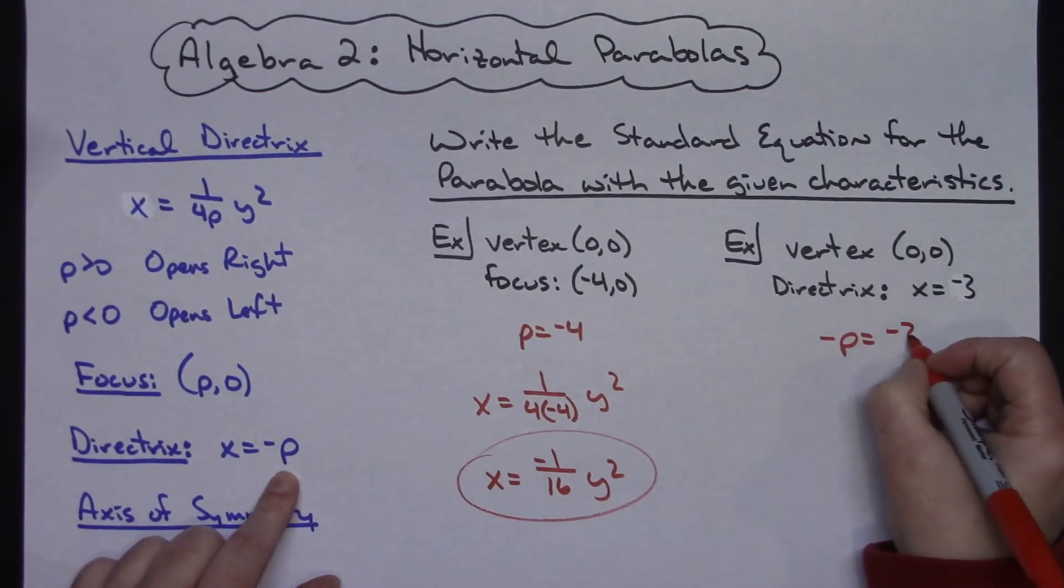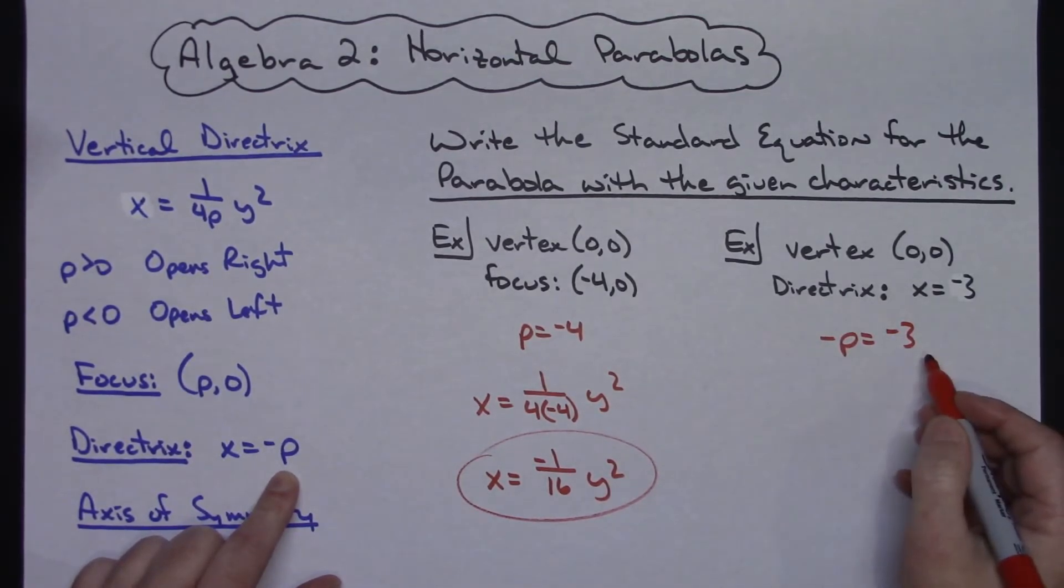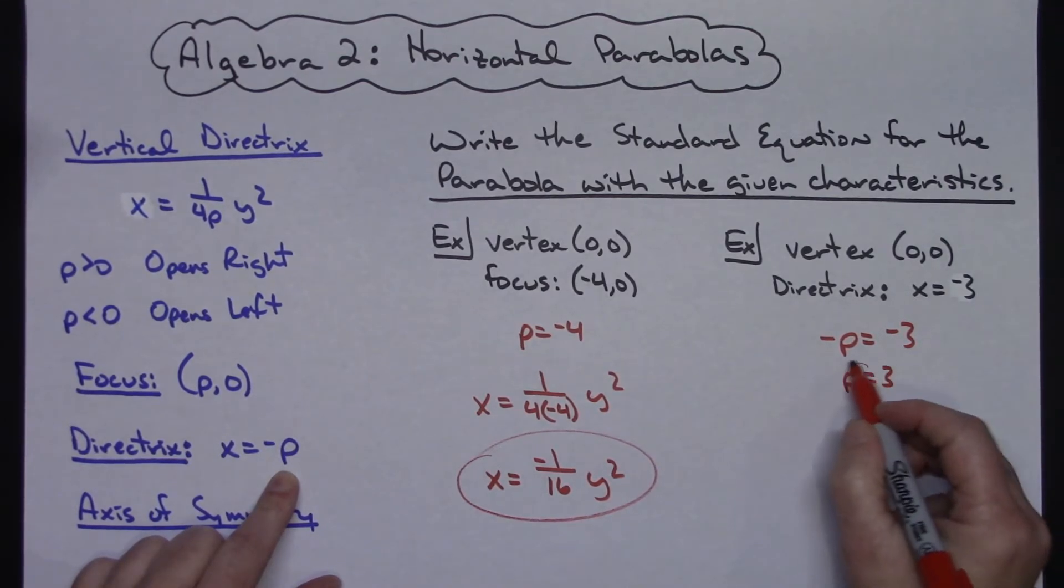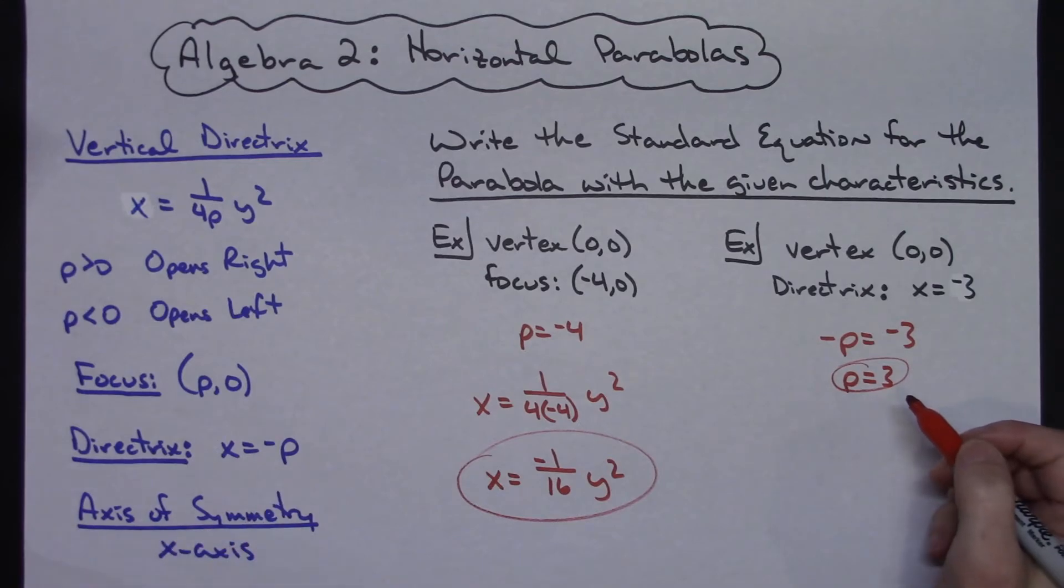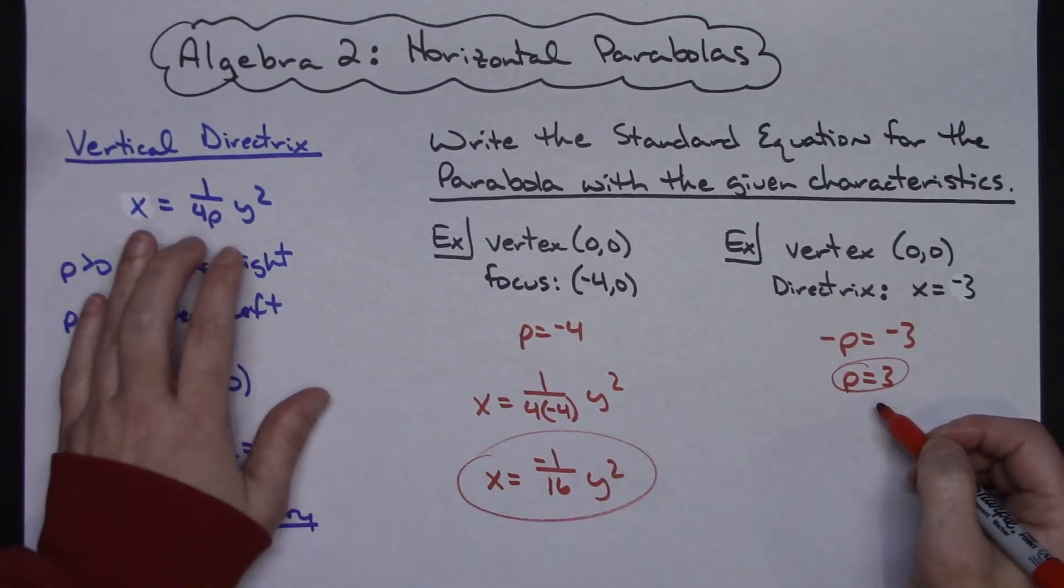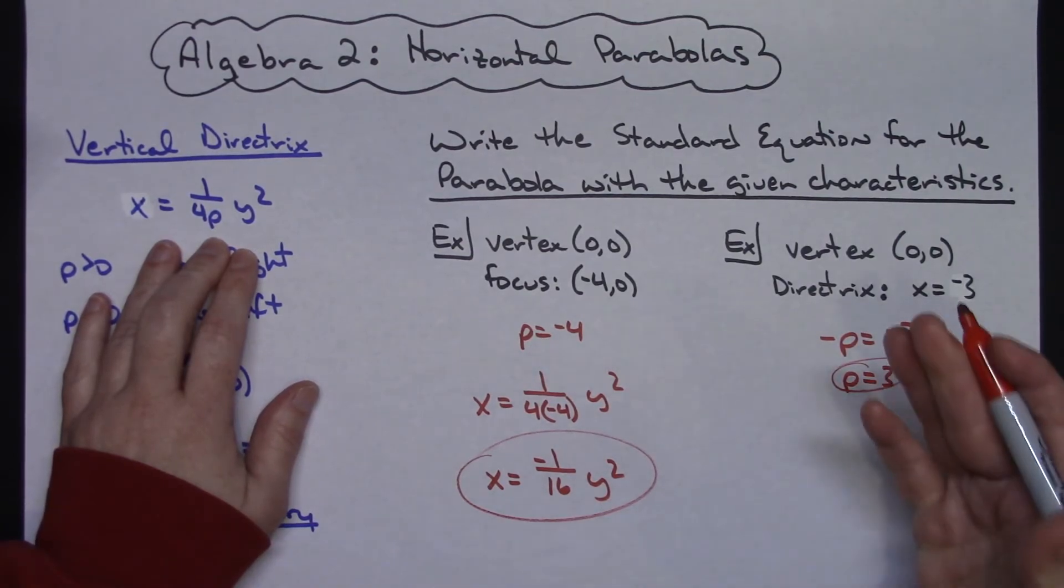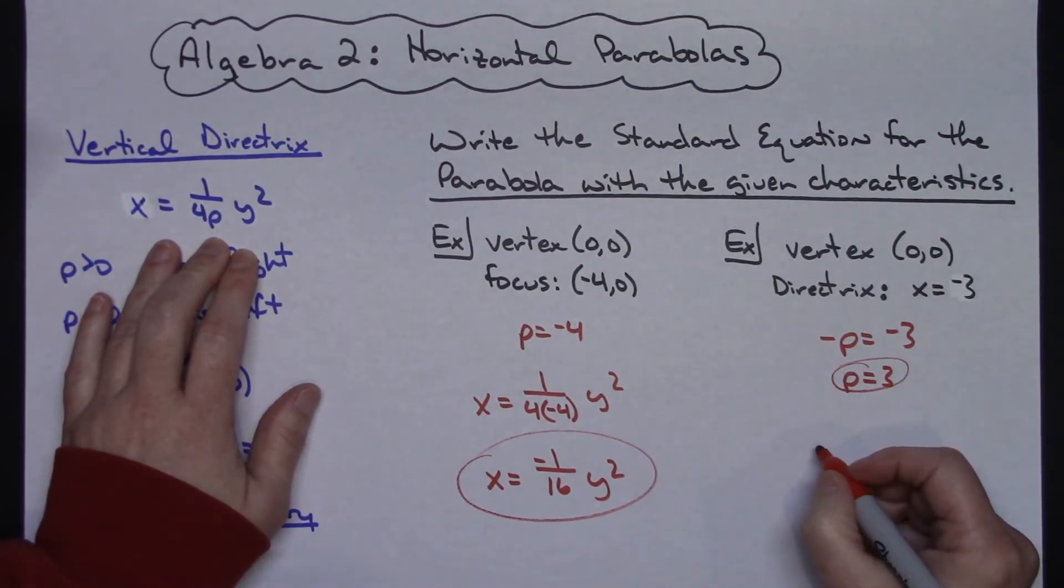So a negative p equals a negative 3. I would need to divide both sides by a negative 1 so then my p is equal to 3. And here again once you have p, then you can use that general form of the equation to write your standard form of the equation.